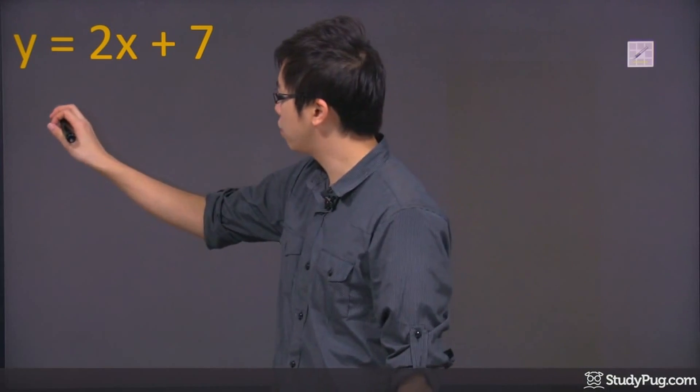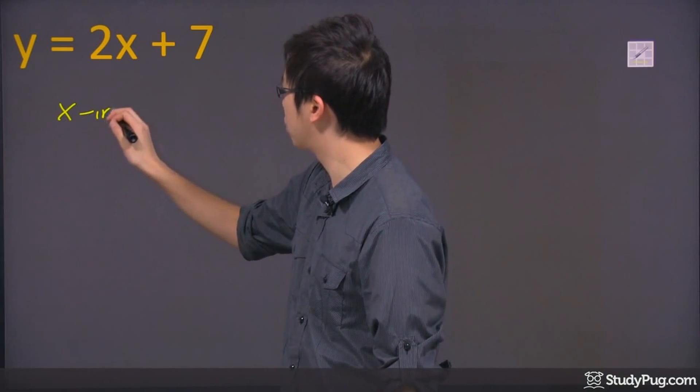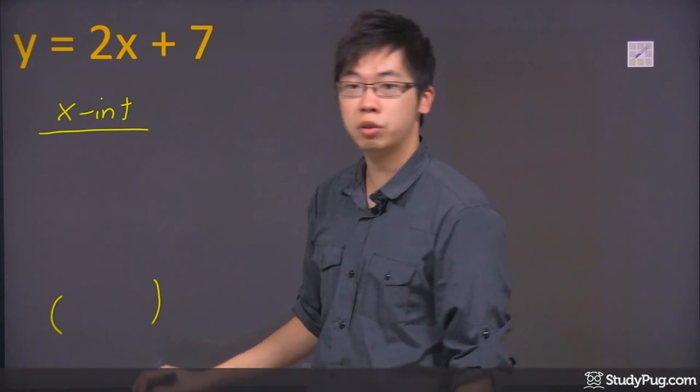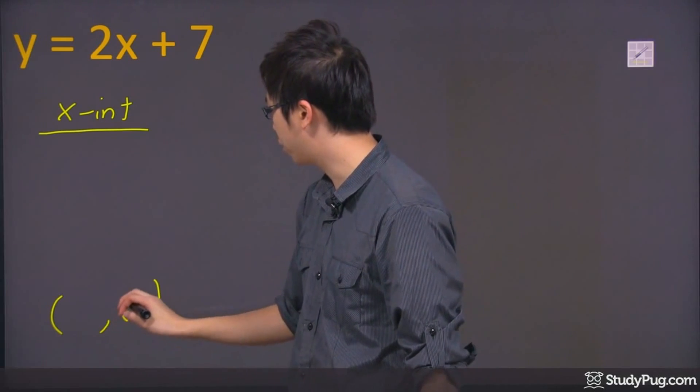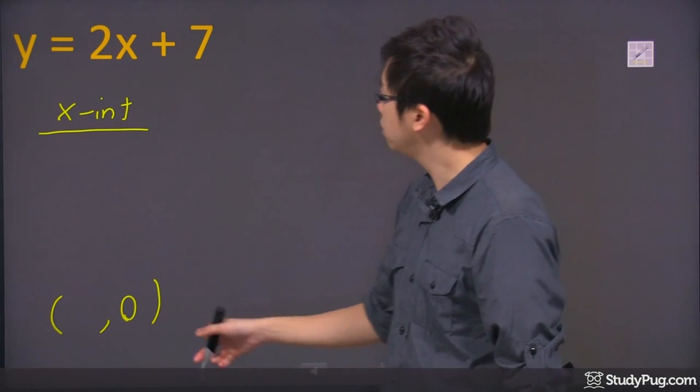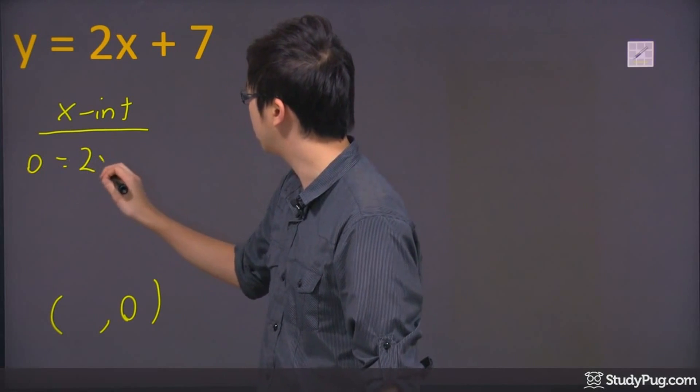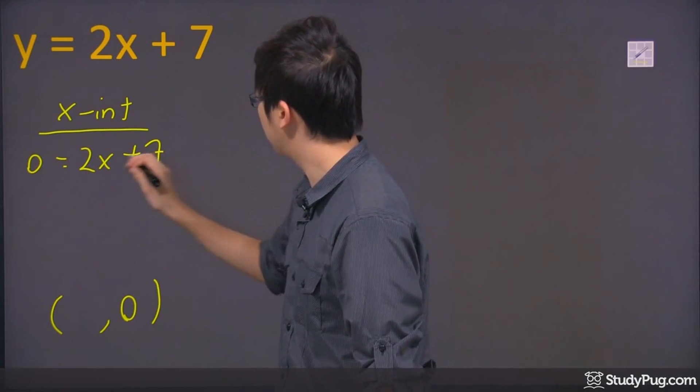So here we go. Find your x-intercept first. Remember, if you're looking for the x-intercept, the final answer should have a zero for the y coordinate. So you're going to put a zero right there for y and solve for x.